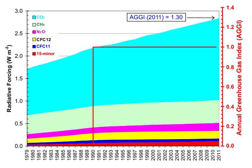Human activities since the beginning of the Industrial Revolution have produced a 45% increase in the atmospheric concentration of carbon dioxide, from 280 ppm in 1750 to 406 ppm in early 2017. This increase has occurred despite the uptake of more than half of the emissions by various natural sinks involved in the carbon cycle.